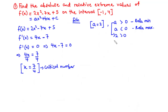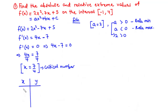We are going to substitute the values of the critical number and the endpoints of the interval, -1 and 4, into this function to find the y values. So we draw a table of x and y. The x values are the endpoints -1 and 4, and then the critical number 7/4. We are going to plug these values into f(x) to find the y values.